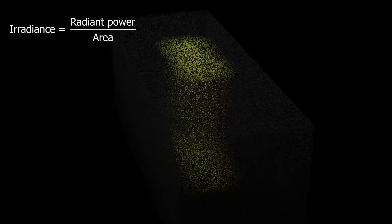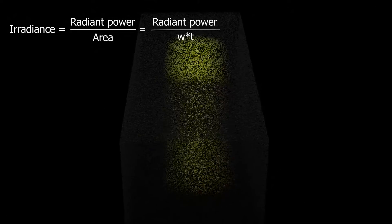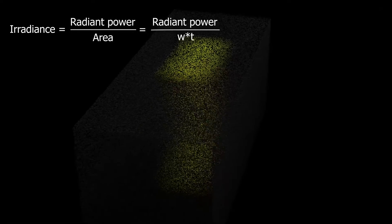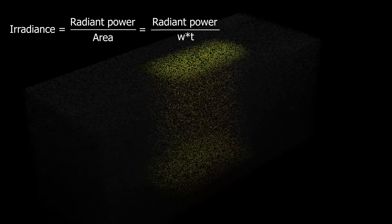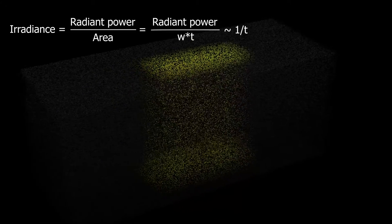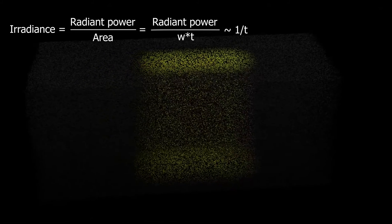As we expand the laser beam to increase the volume thickness we spread out the light energy of the laser pulse over a larger area which is proportional to this thickness t. This means that the light energy intensity per unit area goes down as the inverse of the thickness t which is not great. But it doesn't stop there.